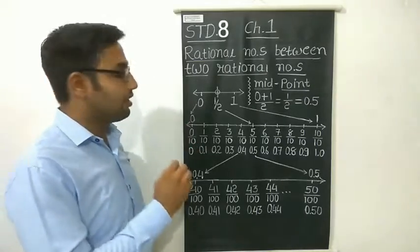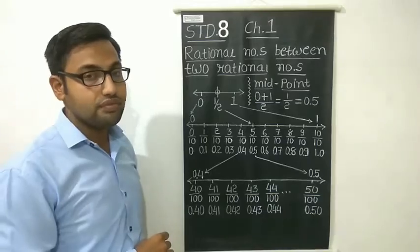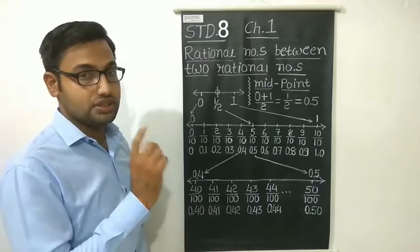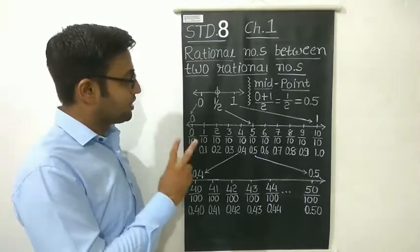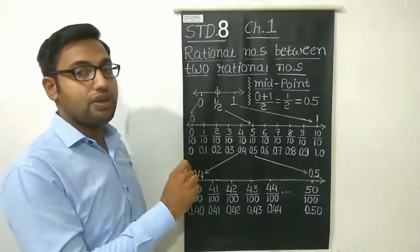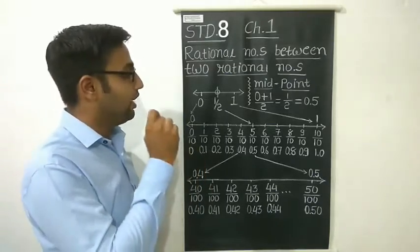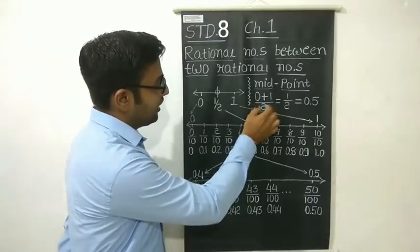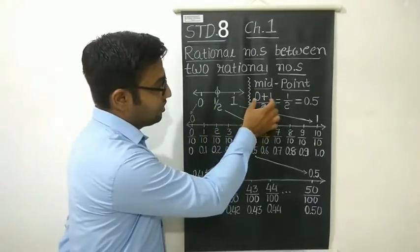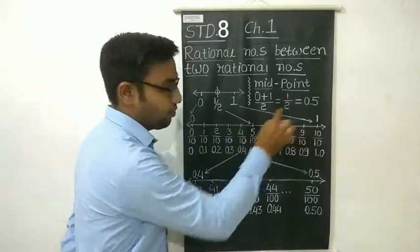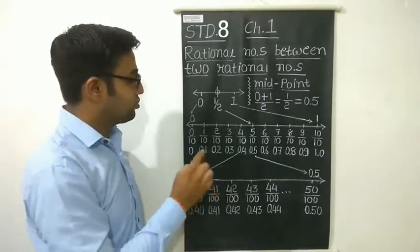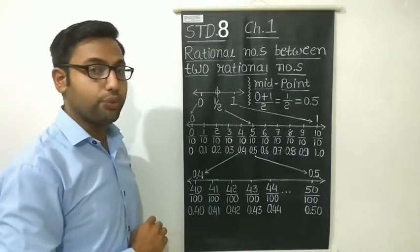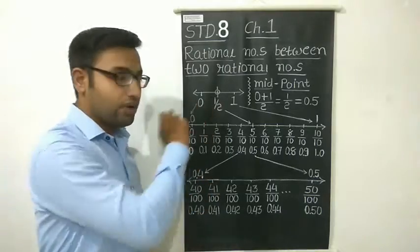Suppose there are two numbers on the number line: 0 and 1. Is there any number between 0 and 1? Yes. What is the mid value of 0 and 1? To find out the mid value of 0 and 1, we have to add these two numbers and then divide by 2. So here we will get 1 by 2, which equals 0.5. So between 0 and 1, we get the number 1 upon 2.